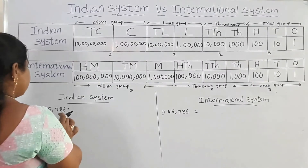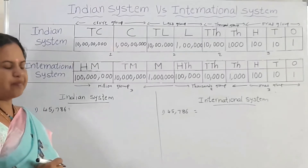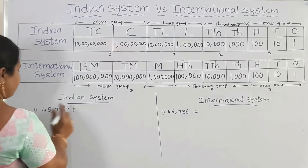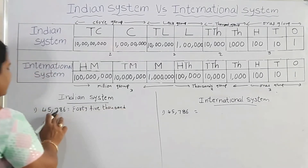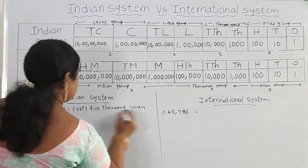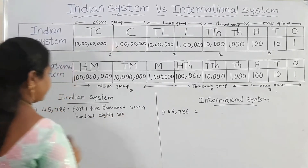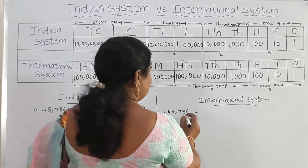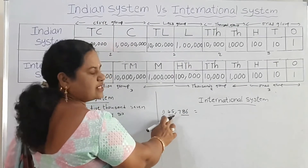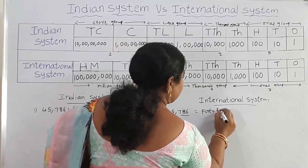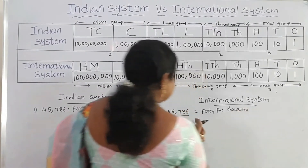Here we have another number. In the Indian system, there are 45,000 thousands. The number is 45,000,786. In the international system, 1st comma after 3 places gives the ones group as 786, and the thousands group is 45,000. So the international system writes it as 45,000,786.